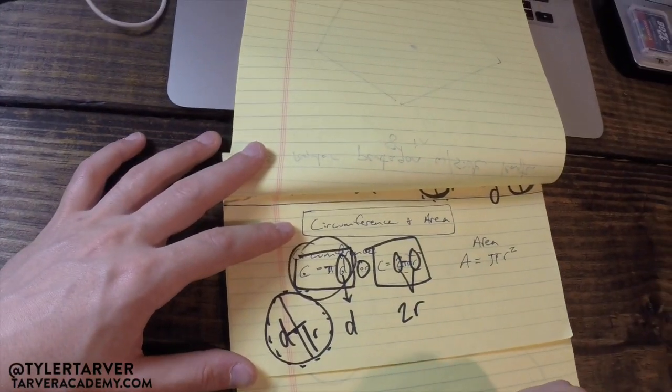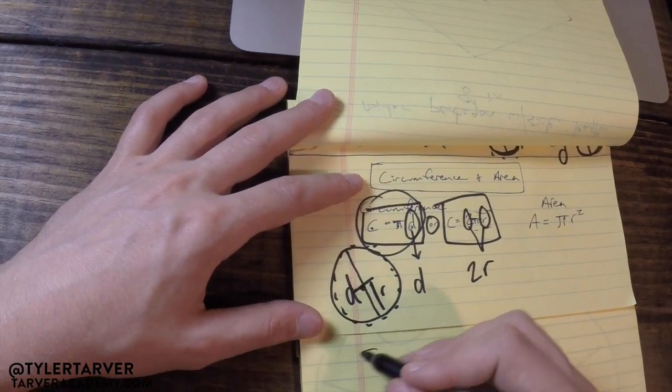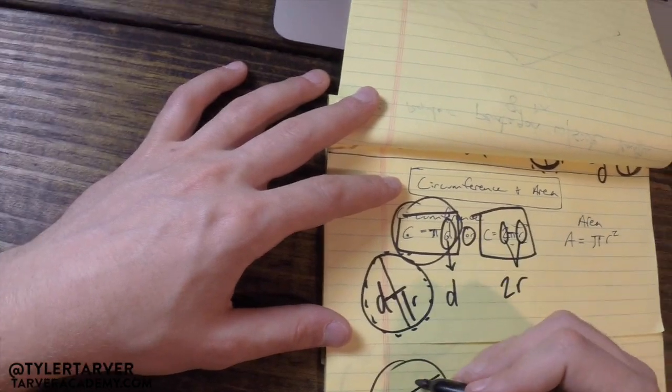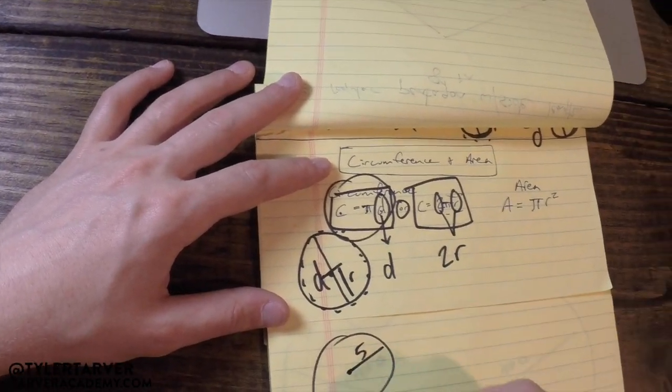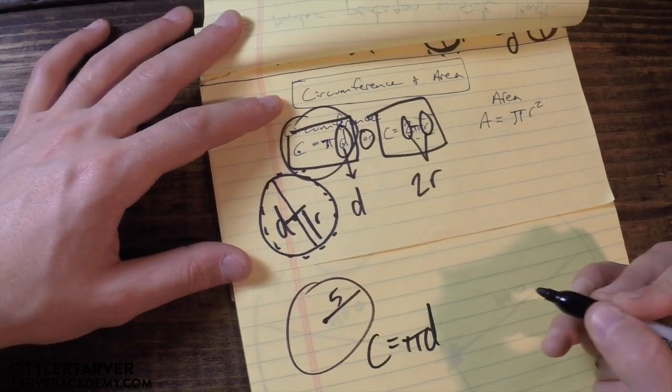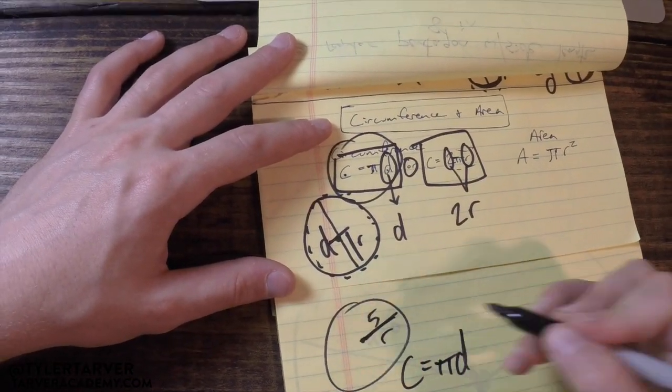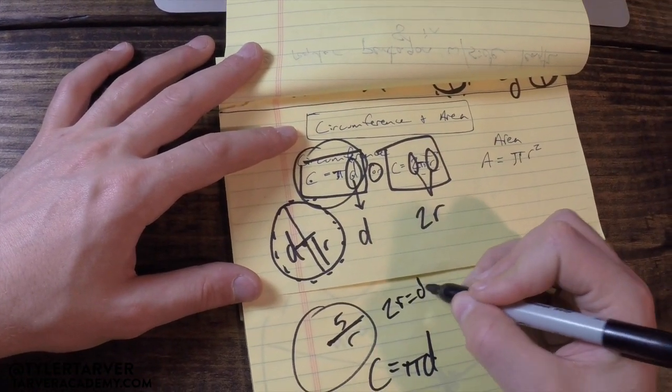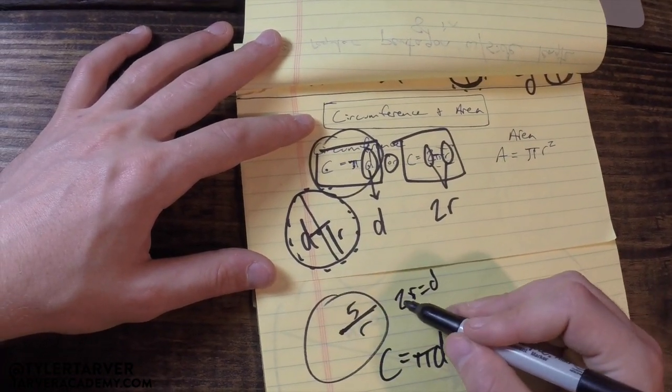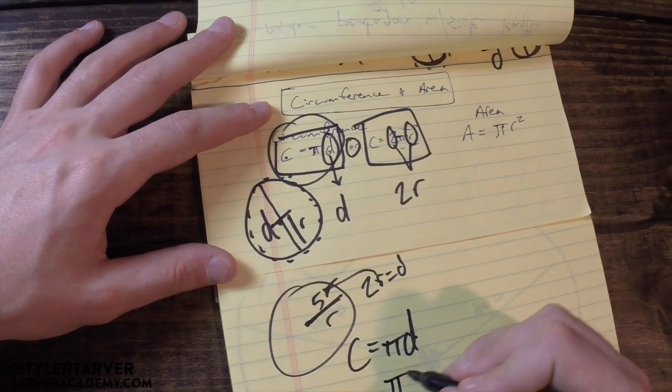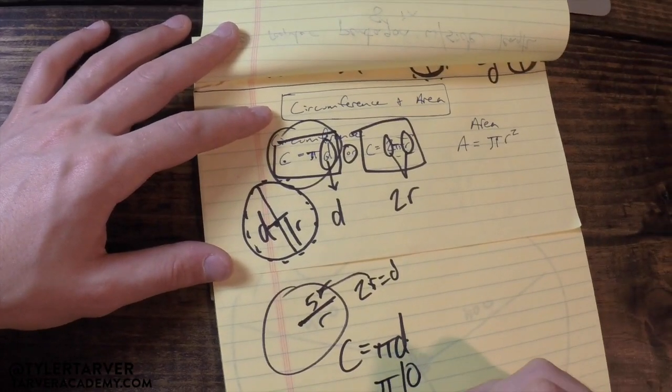Let's do some examples real quick. So you've got the circle and the radius is five. Well, I know my circumference is pi times the diameter. Now I don't have the diameter, I've got the radius, but I know my diameter is always two times the radius. So I could just say two times five is ten, so now it's pi times ten, which we usually like to write like this: ten pi. So your circumference equals ten pi.